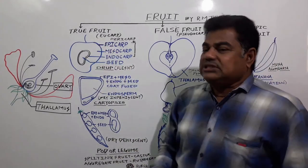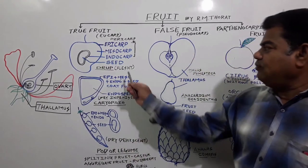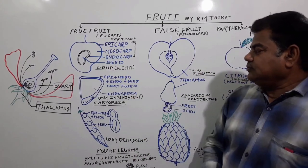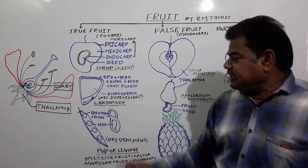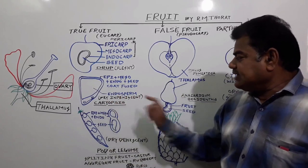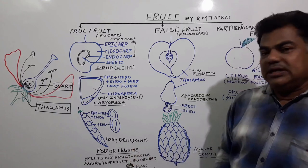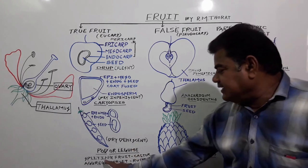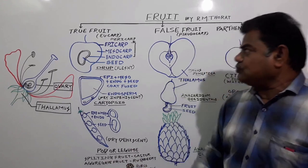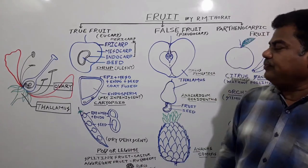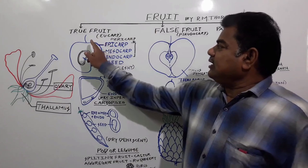True fruits are further differentiated into fleshy fruits, dry indehiscent fruits, dry dehiscent fruits, splitting fruits, and aggregate fruits.